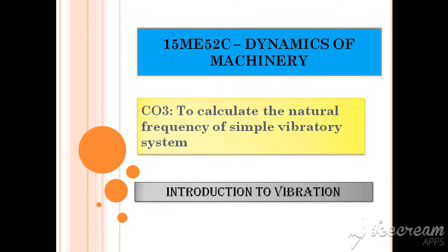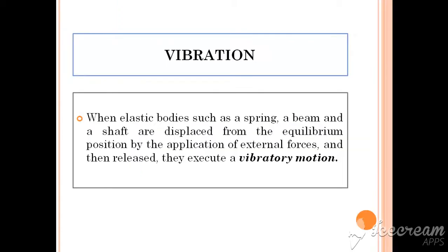Good morning friends. In this lecture video we are going to discuss about what is meant by vibration and the limitations as well as advantages of a system under vibratory motion. Components present in machinery tend to move from their equilibrium position under the action of external loading conditions — that phenomenon is defined as vibration. To reduce vibration in industries, vibration absorbers and vibration isolation techniques are used.